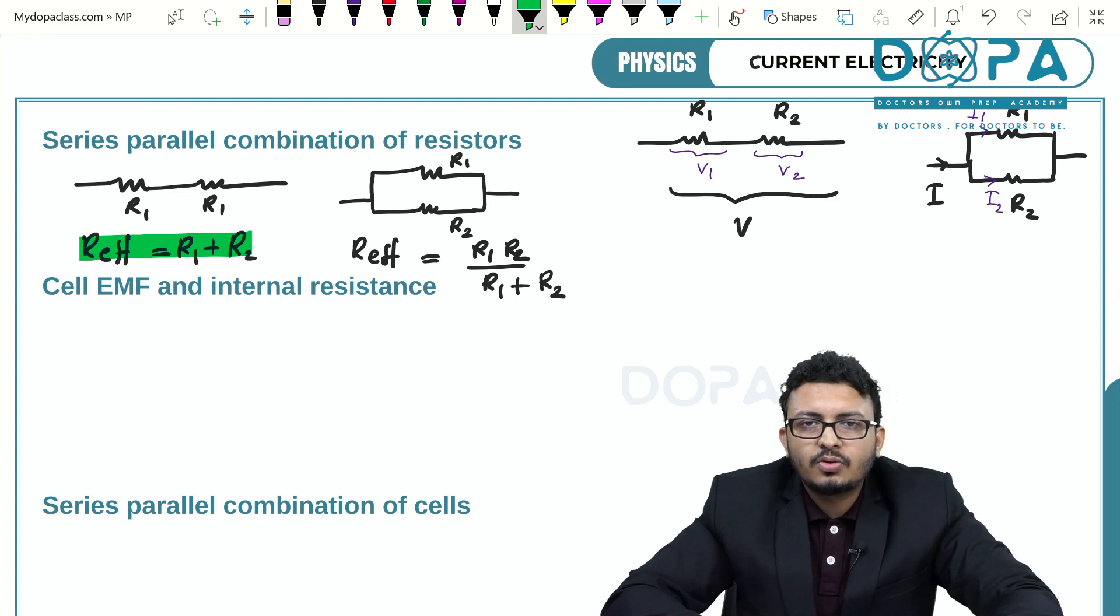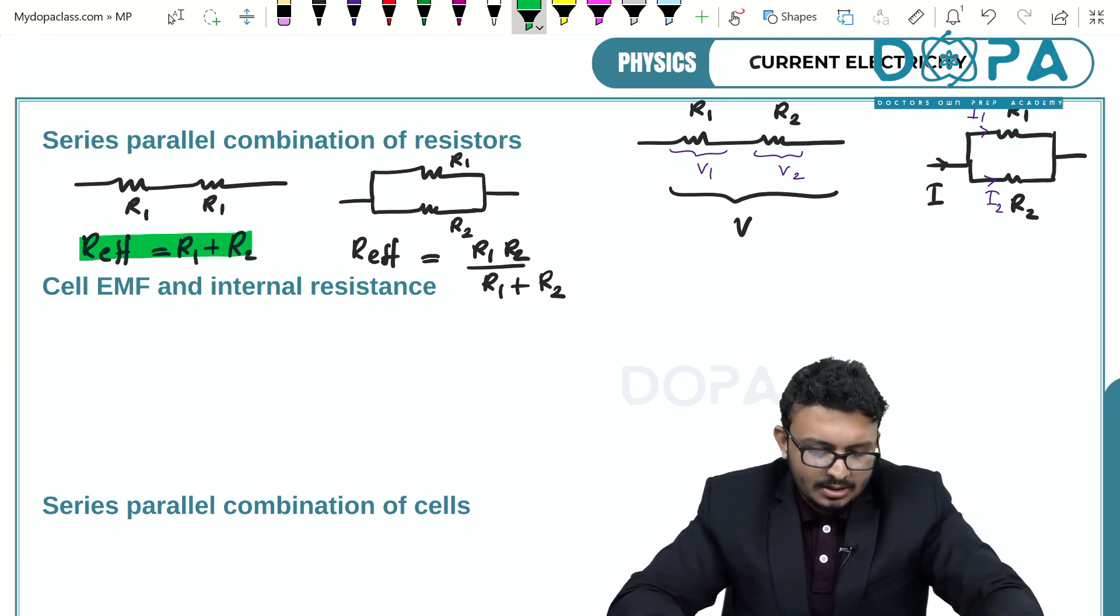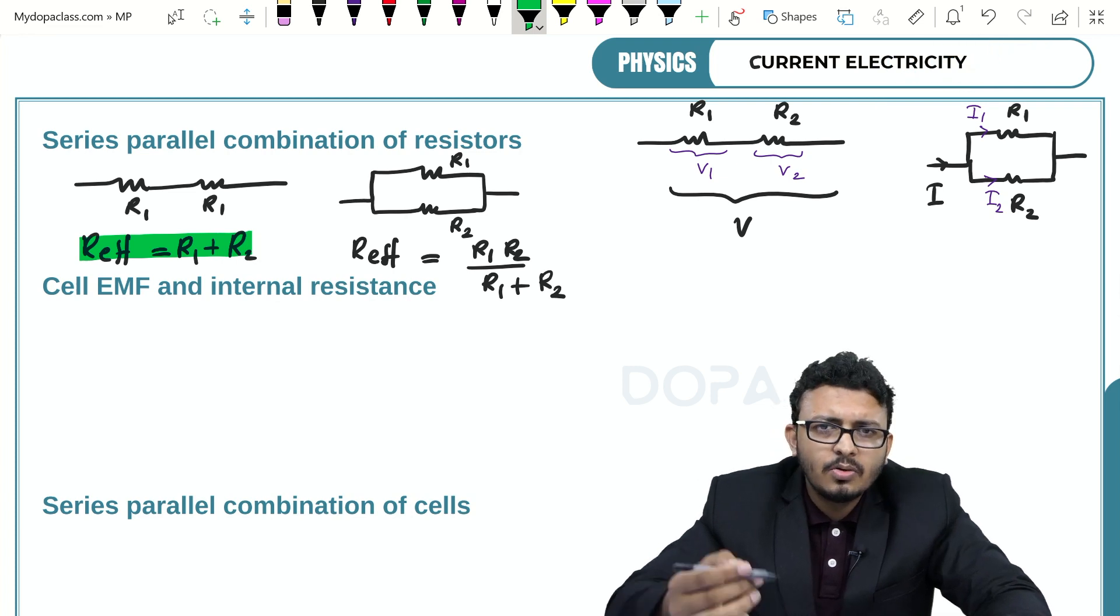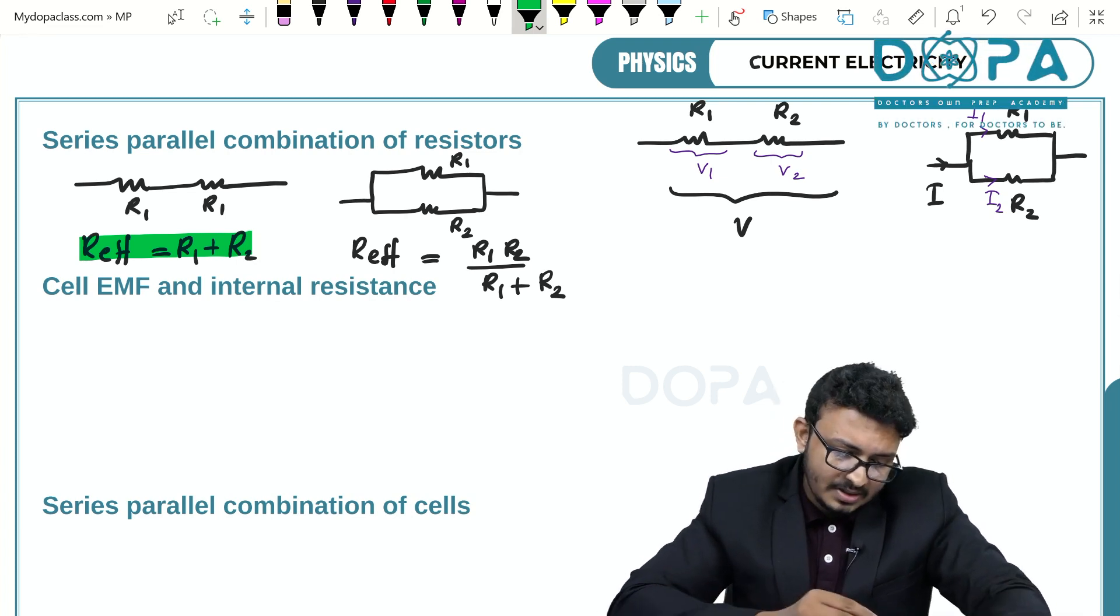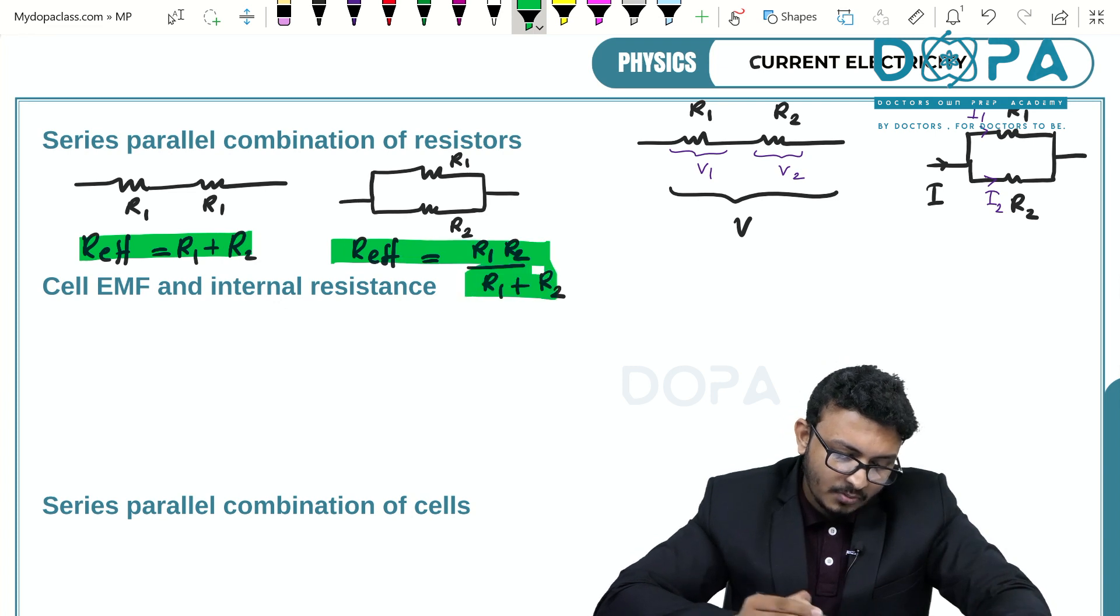Now what about if we connect the two resistors in parallel? Then the effective resistance we learned that 1 by R effective is equal to 1 by R1 plus 1 by R2, or R effective is equal to R1 R2 by R1 plus R2.